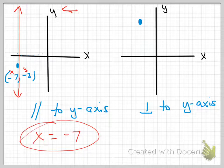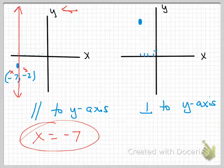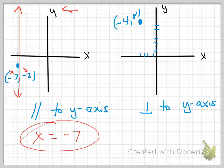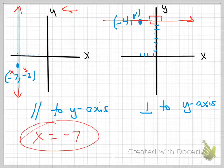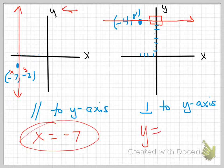The next one is perpendicular to the y-axis through the point negative four, positive eight. Perpendicular means two lines crisscross, making 90-degree angles. I draw the line through that point. It doesn't touch the x-axis — it only touches the y-axis. So my equation is y equals something. Where does it touch the y-axis? At eight. So my equation is y equals eight.